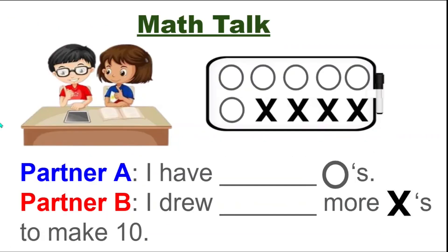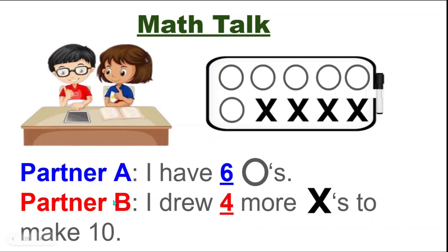Let's have a map talk. Partner A: I have blank circles. Now partner B: I drew blank more X's to make 10. Fill in the blank, guys. Partner A should have said: I have six circles. And partner B: I drew four more X's to make 10.